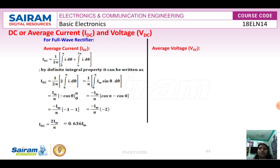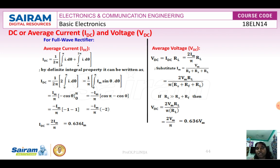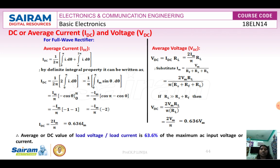For the full wave rectifier voltage, VDC equals IDC × RL, and Im equals Vm divided by (RF + RL). Applying the condition that RL is very much greater than RS plus RF and cancelling terms, we get VDC equals 2Vm/π. This is double the half wave value. That is approximately 0.636 × Vm. We can conclude that the DC average voltage and current of the full wave rectifier is 63.6% of the maximum input voltage or current.